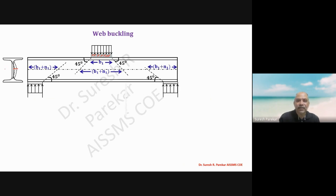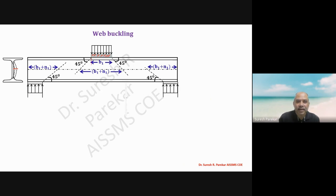If we calculate the value of n1 at an intermediate concentrated load (between supports), we have n1/2 on each side. The depth of the section is d and the angle is 45 degrees, so this distance is d/2. Since the angle is 45 degrees, n1/2 equals d/2 as well, giving us n1 = d (overall depth).